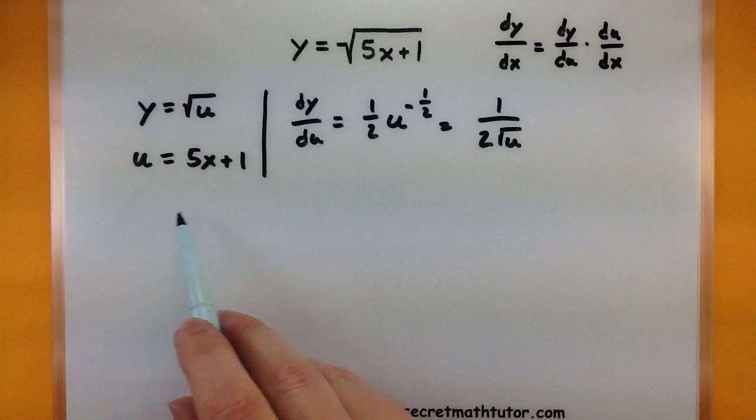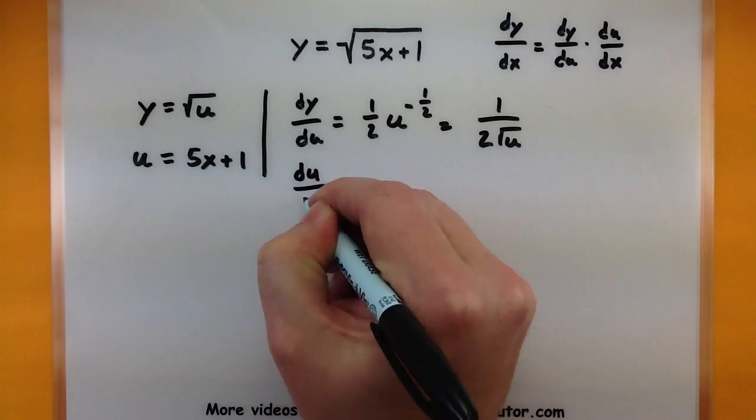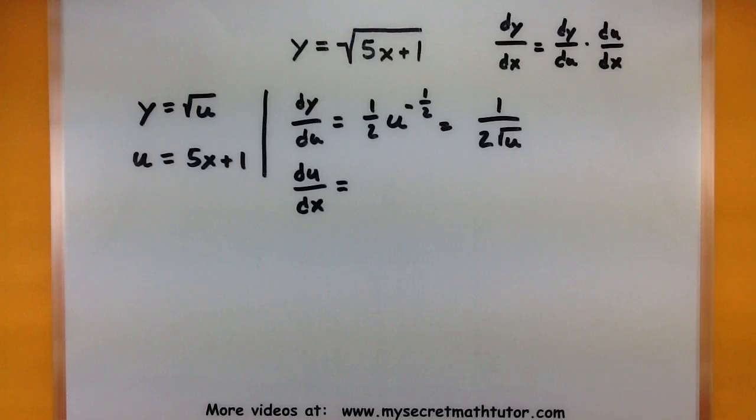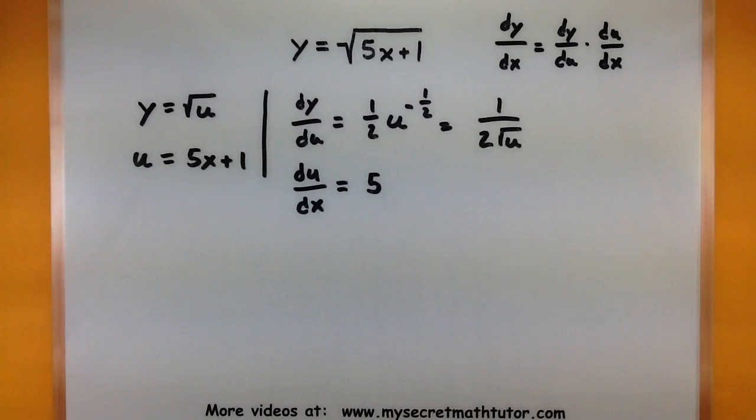Now let's also do the same thing for u down here. Okay, so we want to take its derivative with respect to x. So derivative of u with respect to x. Well, it's a nice linear piece. The derivative, simply 5. So we have these two pieces here that are our derivatives.